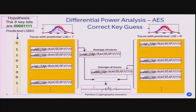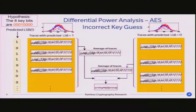You take each bucket, average all the traces in it, and compute the difference between the two buckets. If your key guess is correct — think of it as weights: heavy on one side, light on the other — you will see a difference because you've sorted correctly. You see peaks appearing in the differential trace, and it's totally visual. For an incorrect key guess you're sorting completely randomly, so what ends up in each bucket is on average the same thing — you see nothing, no peaks, nothing distinguishable. That's SPA and DPA in a nutshell.